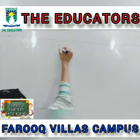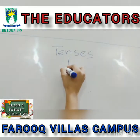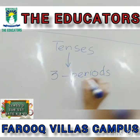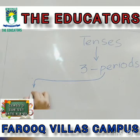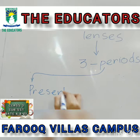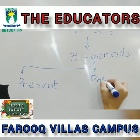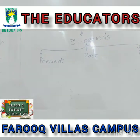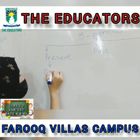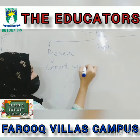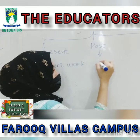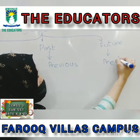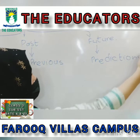In today's class we will revise some tenses. Tenses means periods. There are three types of periods: number one, present; number two, past; and the third one is future. In present tense we will discuss about the current work. In past tense the sentences are about the previous work or previous action. And in future tense, about the predictions or future plans.